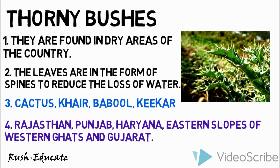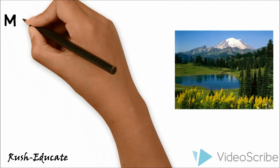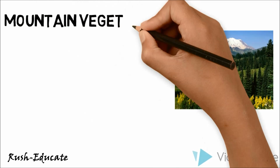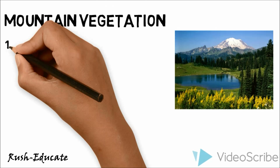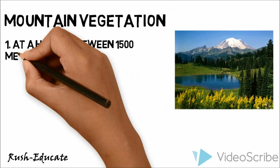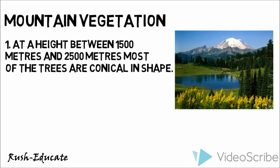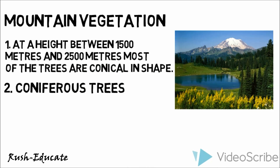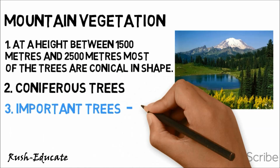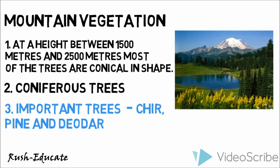A wide range of species is found in the mountains according to the variation in height. With increase in height, the temperature falls. At a height between 1,500 meters and 2,500 meters, most of the trees are conical in shape. These trees are called coniferous trees. Chir, pine, and cedar are important trees of these forests.